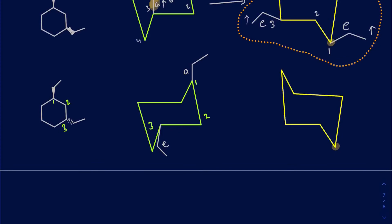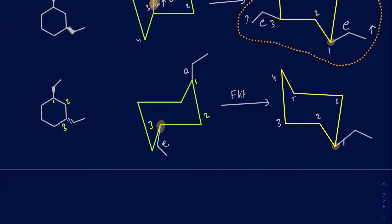When I flip the trans 1,3 conformation, carbon one had the ethyl on axial but now it's going to be on equatorial. On the third carbon, the ethyl was previously equatorial, but now it will be on the axial because the position gets flipped. So between those two conformations, you don't really have one more stable over the other, because in both conformations I've got one axial ethyl and one equatorial ethyl — both are equally stable.